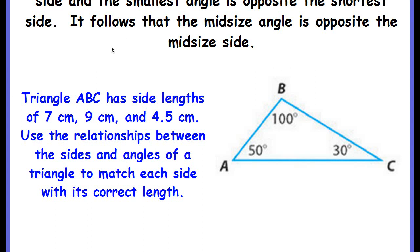In a triangle, the largest angle is opposite the longest side, and the smallest angle is opposite the shortest side, and it follows that the mid-size angle is opposite the mid-size side. So the large angle is opposite the large side, the smallest angle is opposite the smallest side, and the middle angle is opposite the middle size.